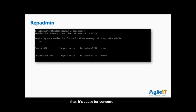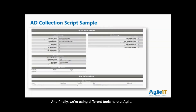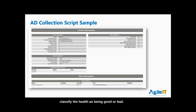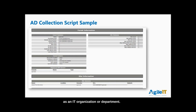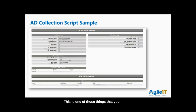Another tool we use at Agile IT is a collection script. This doesn't necessarily tell you the health of a domain by itself, but it provides the information so we can make an informed decision and classify the health as good or bad. It also lists additional details — where the sites are, what domain each site is servicing, and what the primary domain controller for that site is. As a good common practice, this isn't done enough — we're a valuable resource and everybody wants our time, but this is something you really should spend time on.